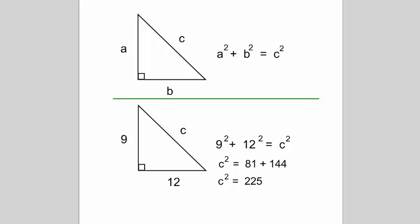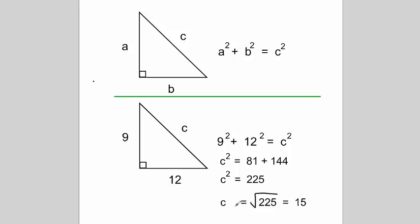And then you want c equals the square root of 225, which equals 15. You can put that in your calculator. c equals 15. So we've looked at that before,